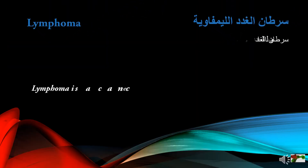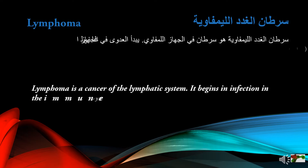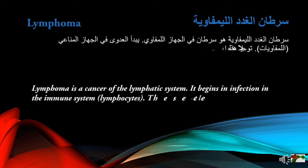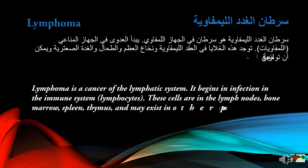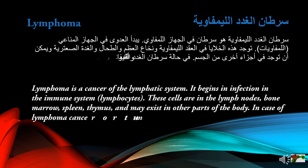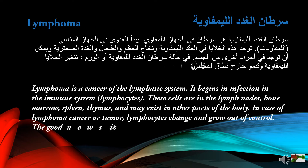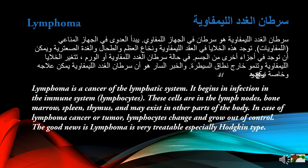Lymphoma is a cancer of the lymphatic system. It begins with infection in the immune system's lymphocytes. These cells are in the lymph nodes, bone marrow, spleen, thymus, and may exist in other parts of the body. In the case of lymphoma, lymphocytes change and grow out of control. The good news is lymphoma is very treatable, especially the Hodgkin type.